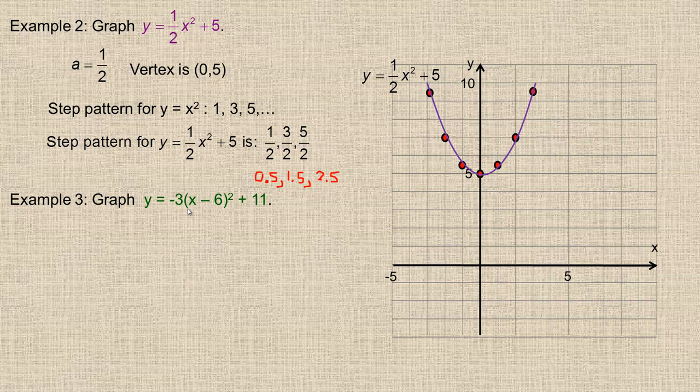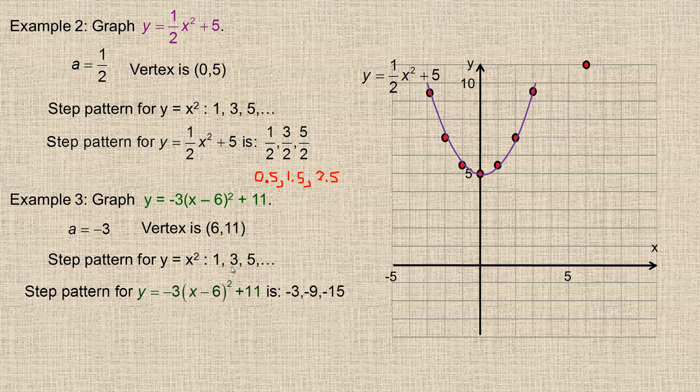Last one here, number 3, graph y equals -3(x - 6)² + 11. The a value would be negative 3 in this case. The vertex would be at (6, 11). So I'm going to plot my vertex first, so over 6 and up 11, so there's my vertex. Now remember the step pattern for the standard parabola, y equals x² is 1, 3, 5, so we're going to multiply each of these by negative 3. So 1 times negative 3 is negative 3, 3 times negative 3 is negative 9, 5 times negative 3 is negative 15. Of course, the numbers start getting pretty big if the stretch is very large.